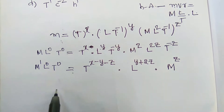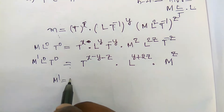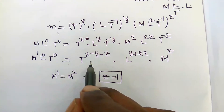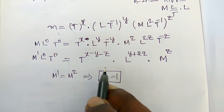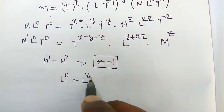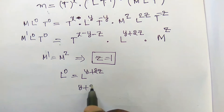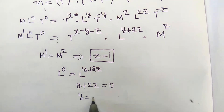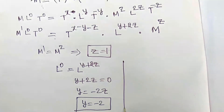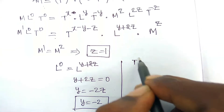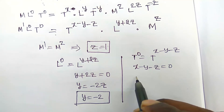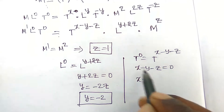Grouping the powers: T^(x − y − z), L^(y + 2z), M^z. So on the right-hand side we have M^z · L^(y+2z) · T^(x−y−z). The left-hand side is M¹·L⁰·T⁰. Now we compare corresponding powers.